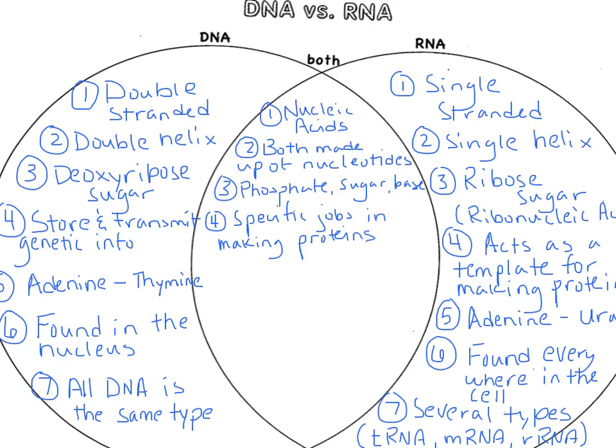We talked about the nitrogen bases. Remember, the only difference is adenine thymine for DNA and adenine uracil for RNA. But guanine and cytosine are the same. So both DNA and RNA have guanine bonding to cytosine.